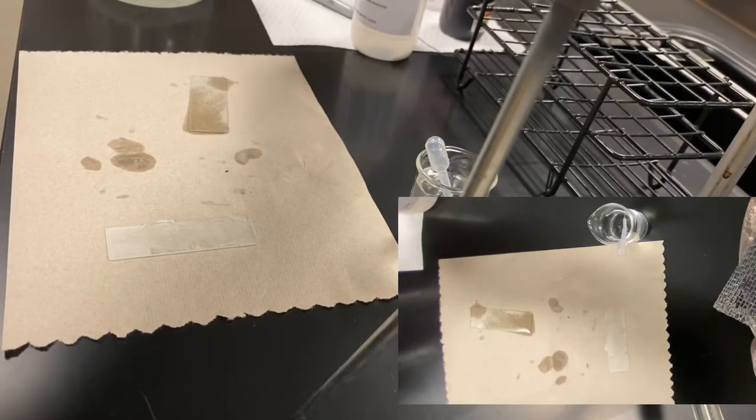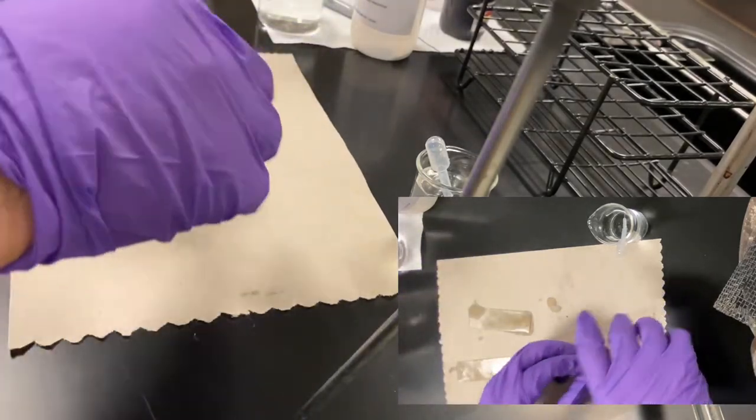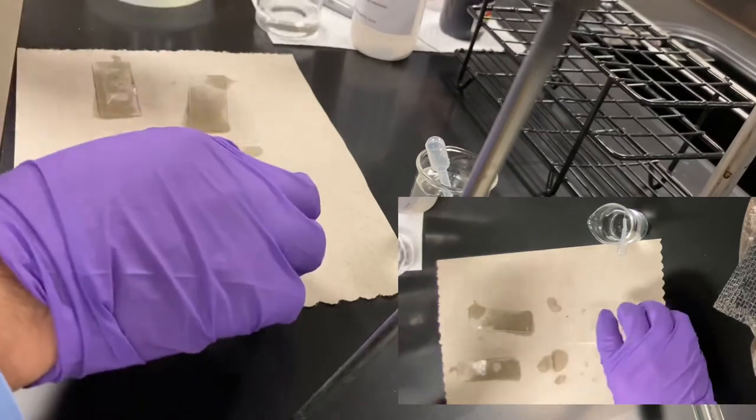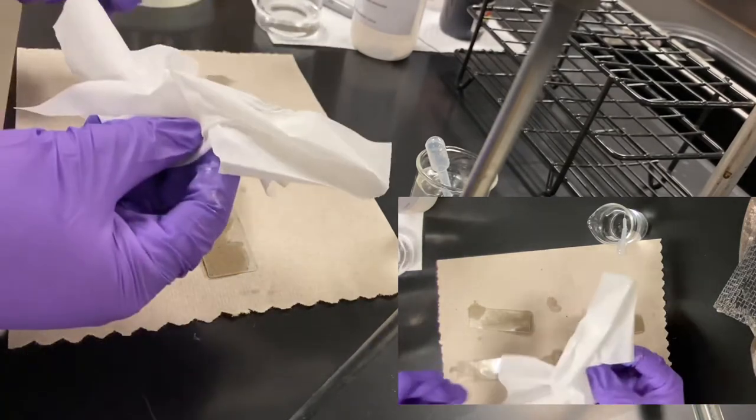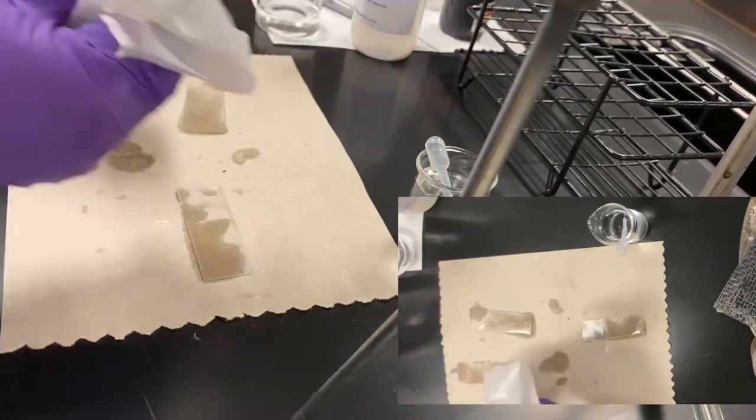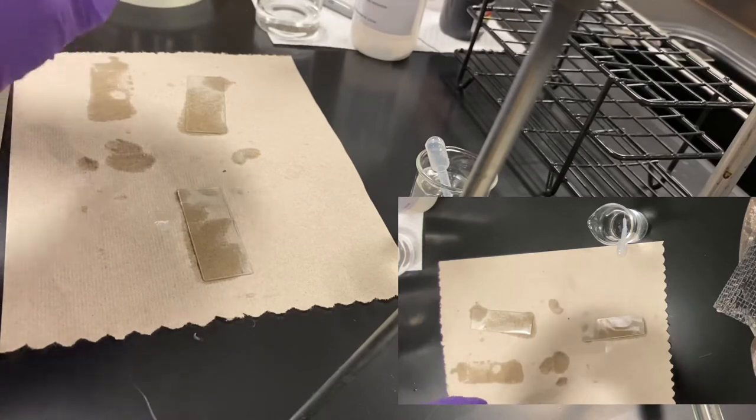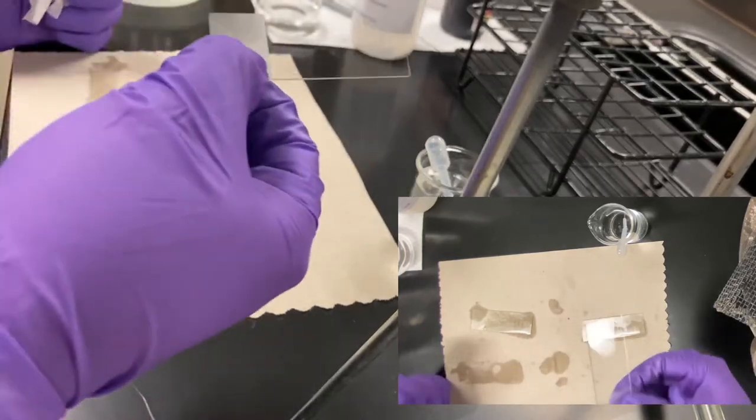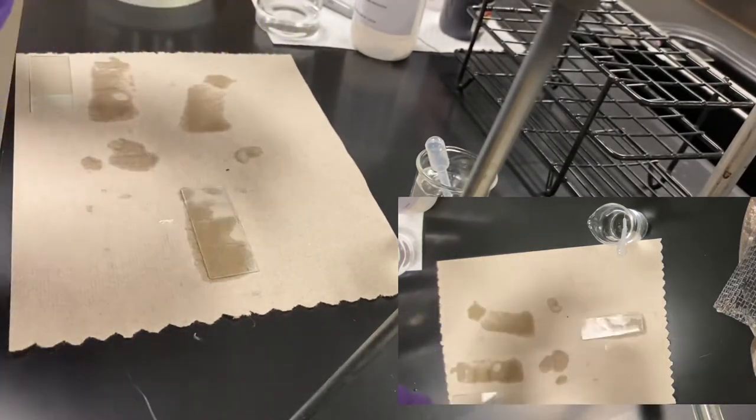Now what we're going to do after we rinse these is use a couple of kim wipes to wipe them off. I'll take some kim wipes, nothing out of the ordinary, and just pass it through. We'll actually see our slides are much cleaner, shinier, and that's what we want to use. I'll dry off all of these and then we'll continue with our setup.